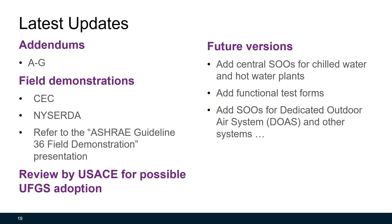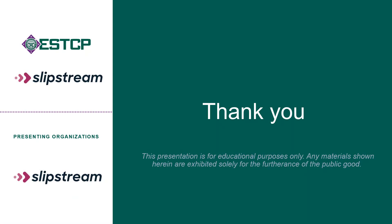This guideline is now in continuous maintenance mode, meaning the ASHRAE Standing Guidelines Project Committee (SGPC 36) continues to add addendums, fix errors, and add more sequences. There are a couple of field demonstrations ongoing. Under ESTCP support, this guideline is also being reviewed by the Army Corps of Engineers for possible Unified Facility Guide Specification adoption for the HVAC Sequence of Operations section. Future plans include adding central plant sequences for chilled water and hot water plants, functional test forms, sequences for dedicated outdoor air systems, and other systems. Thanks for watching.